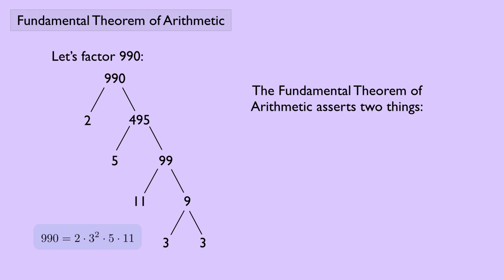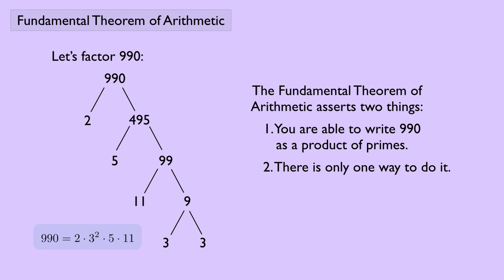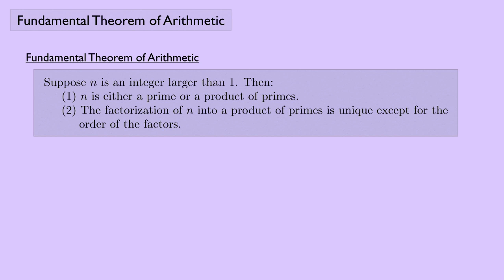The fundamental theorem asserts two things. The first thing is, you are able to write 990 as a product of primes. And the second thing is, there's only one way to do it. So here's the fundamental theorem of arithmetic: suppose n is an integer larger than 1. Then n is either a prime or a product of primes. And number two, the factorization of n into a product of primes is unique, except for the order of the factors.